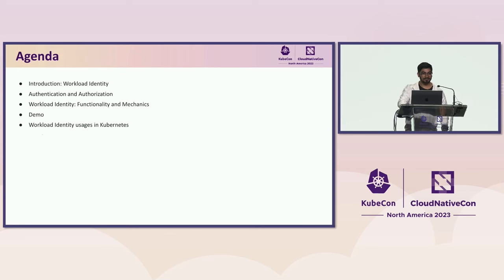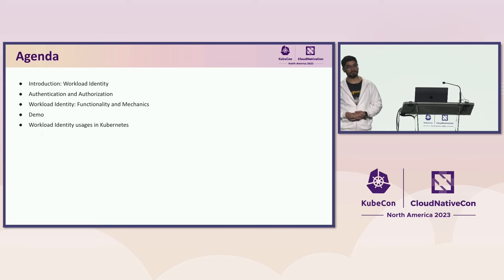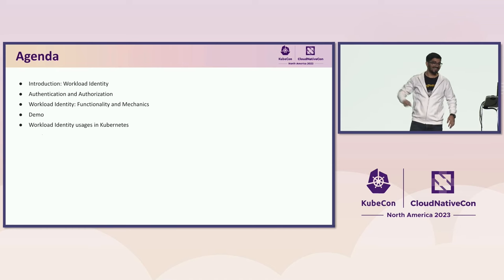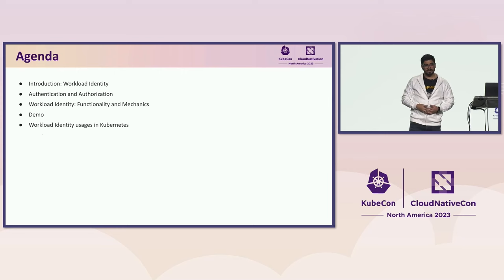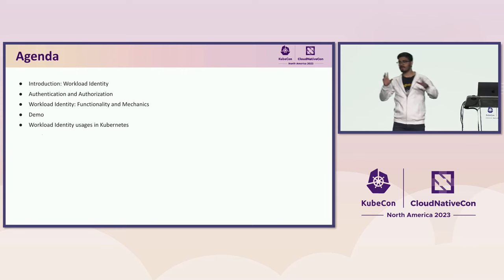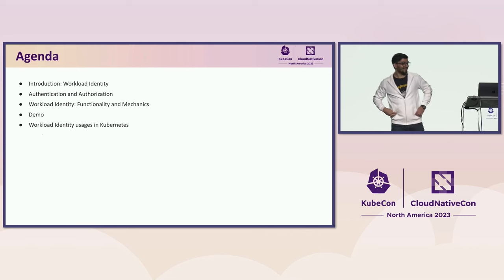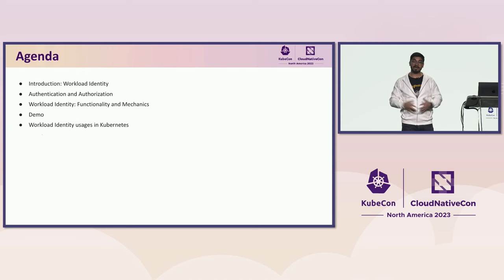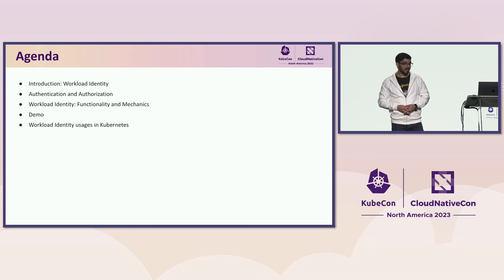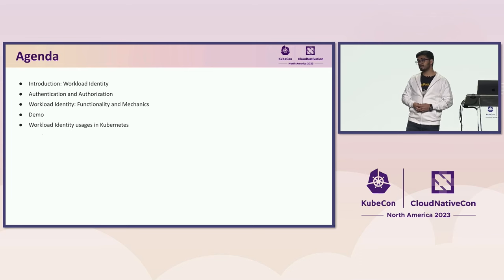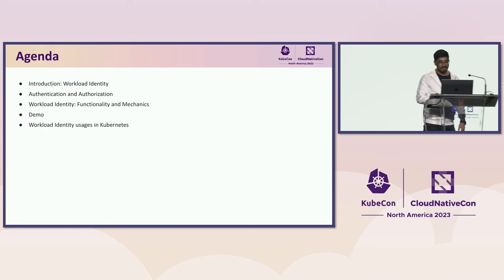So let's get started. This is the agenda we're going to talk about. We'll give an introduction around workload identity, do a refresher on authentication and authorization, then Anish will help us understand workload identity in detail — how it works in the context of Kubernetes — and we have a demo. After that, we'll talk about a couple of usages of workload identity in Kubernetes.